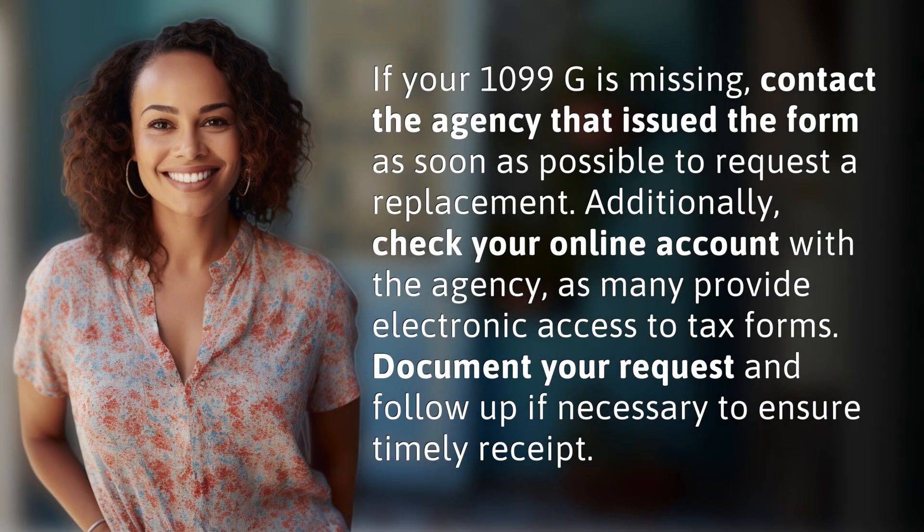If your 1099G is missing, contact the agency that issued the form as soon as possible to request a replacement. Additionally, check your online account with the agency, as many provide electronic access to tax forms. Document your request and follow up if necessary to ensure timely receipt.